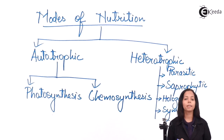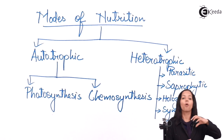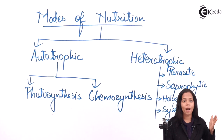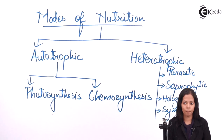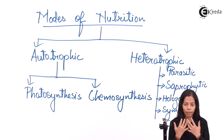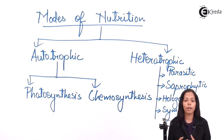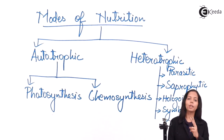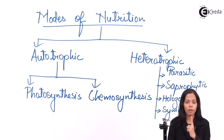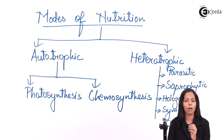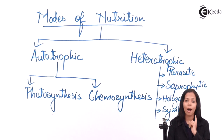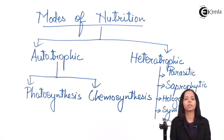Parasitic means the organism obtains food from the body of another organism by causing it harm. The body from which food is obtained by harming it is called the host body. So two things to remember in parasitic mode: first, the body from which the organism obtains food is called the host body; and second, the condition for obtaining food is to harm the host body.